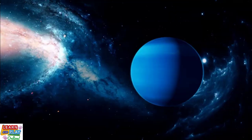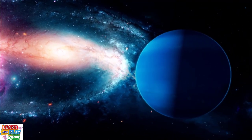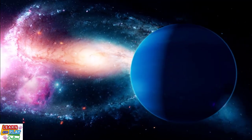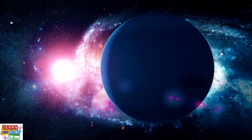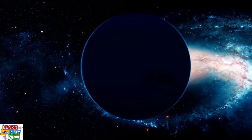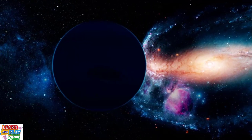Neptune orbits the Sun at around 2.8 billion miles, or 4.5 billion kilometers in distance. And because of this, it takes the longest out of all the planets in the solar system to travel around the Sun. One year on Neptune is equivalent to 165 Earth years.